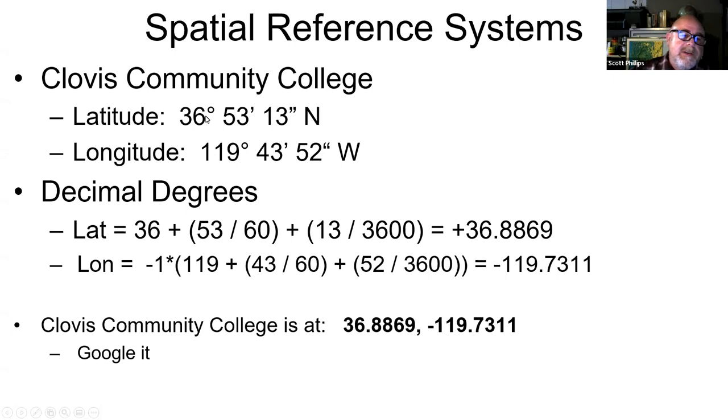Clovis Community College, the latitude is 36 degrees, 53 minutes, 13 seconds, and longitude is 119 degrees, 43 minutes and 52 seconds. With the latitude, we did that one already. It's 36 plus 53 divided by 60, plus get the seconds in there, 13 divided by 3600 because they're 1/3600th degrees. We calculated that number already.